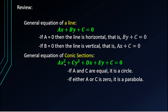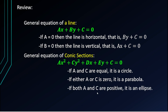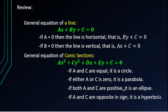Always remember: only one of a or c should be zero. If both a and c are zero, the squared terms disappear and the equation becomes a line. If both a and c are positive it is an ellipse, and if a and c are opposite in sign it is a hyperbola.